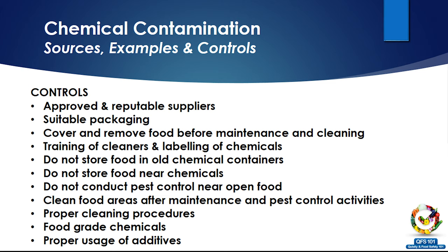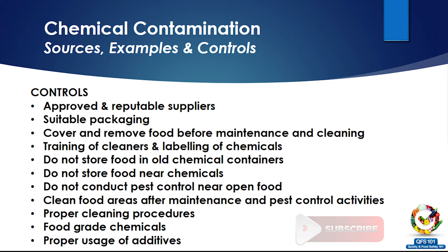There is a whole list of controls on screen. Approved suppliers help control chemical contamination from the supplier side — for example, a farmer using safe quantities of pesticides, or an organic farmer. Similarly, use good food-grade cleaning chemicals that come with proper MSDS documentation and proper approvals from authorities. Training of people using those chemicals, and approved pest contractors using reputable chemicals, are also key controls.